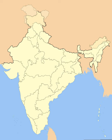The Rajpramukh was appointed by the President of India. The Part B states were Hyderabad, Jammu and Kashmir, Madhya Bharat, Mysore, Patiala and East Punjab States Union (Pepsu), Rajasthan, Saurashtra, and Travancore-Cochin. The ten Part C states included both the former chief commissioner's provinces and some princely states, and each was governed by a chief commissioner appointed by the President of India.